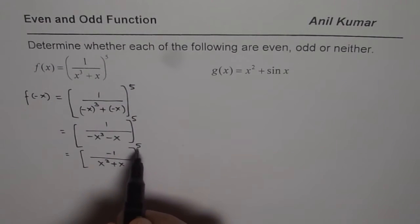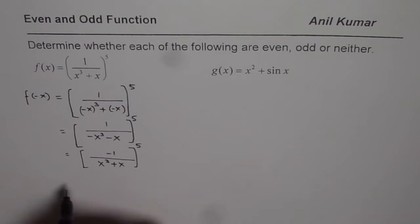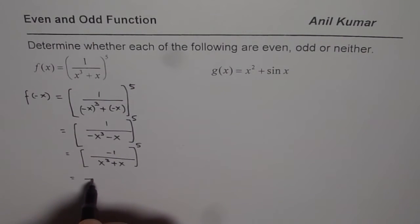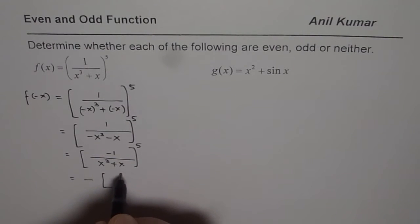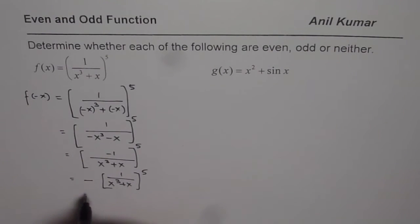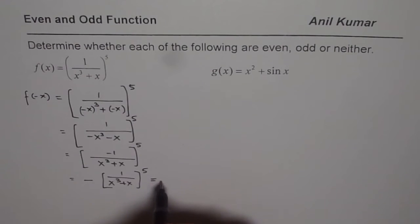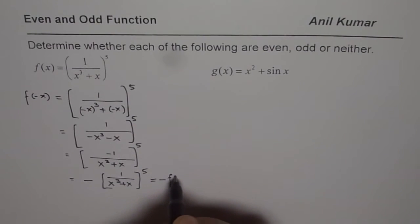Now, negative 1 to the power of 5 will give us negative 1. So we get negative outside and we get 1 over x cube plus x to the power of 5. Now, this is indeed negative of the given function. So we write this as equal to minus f of x.